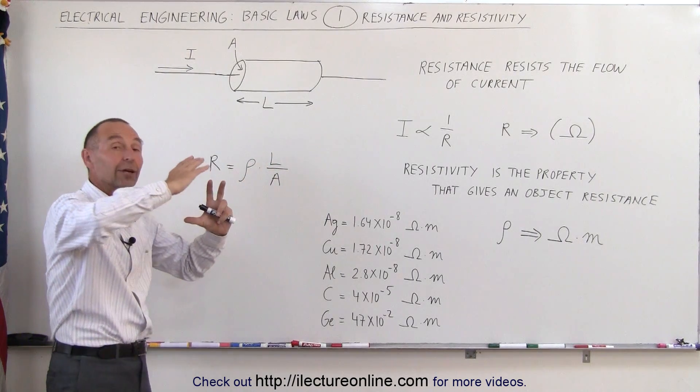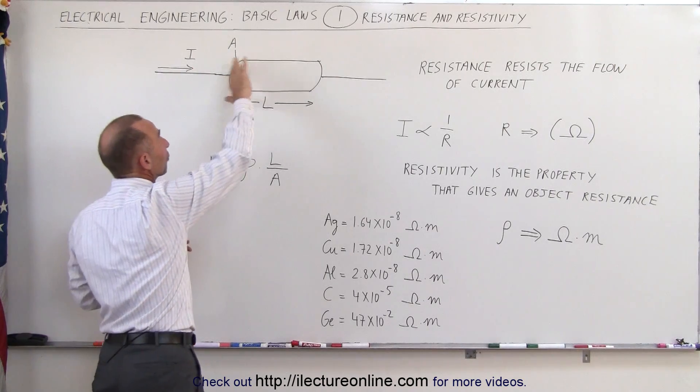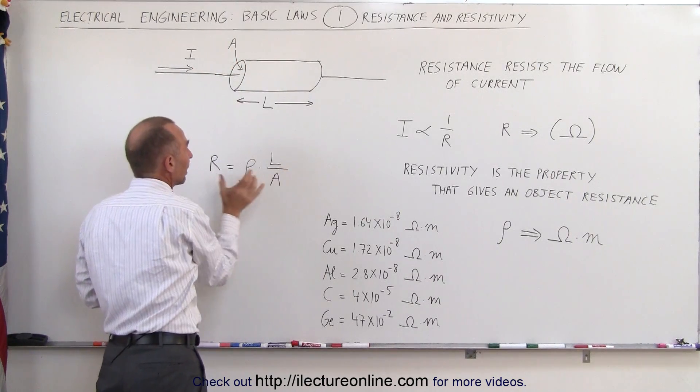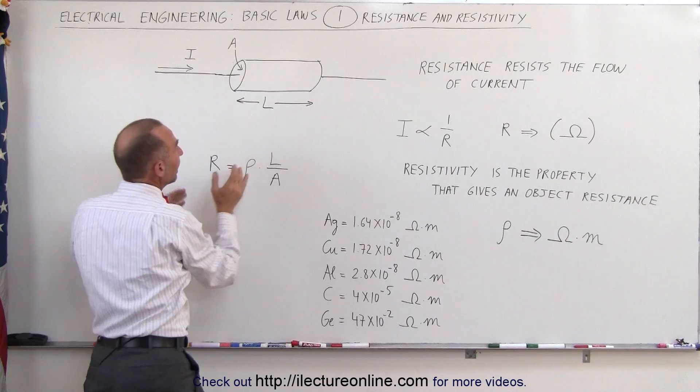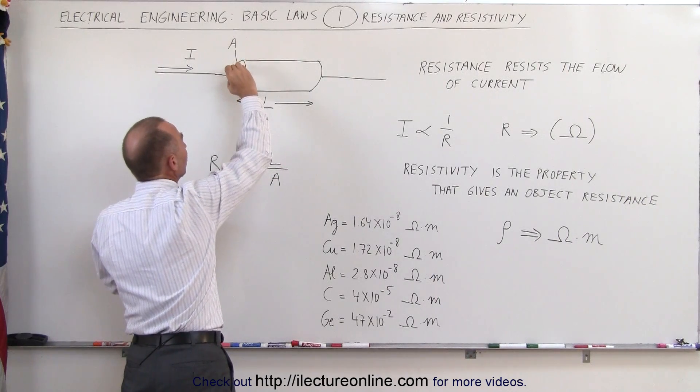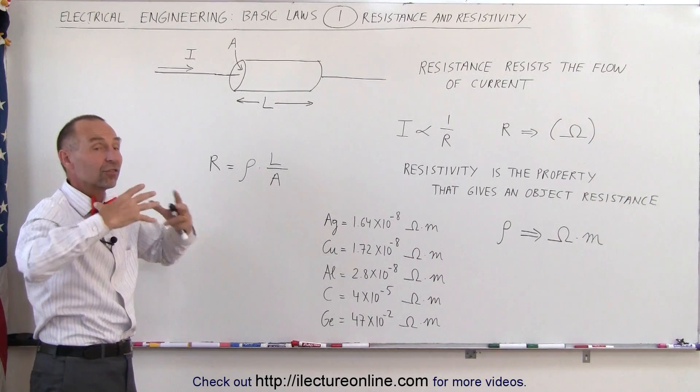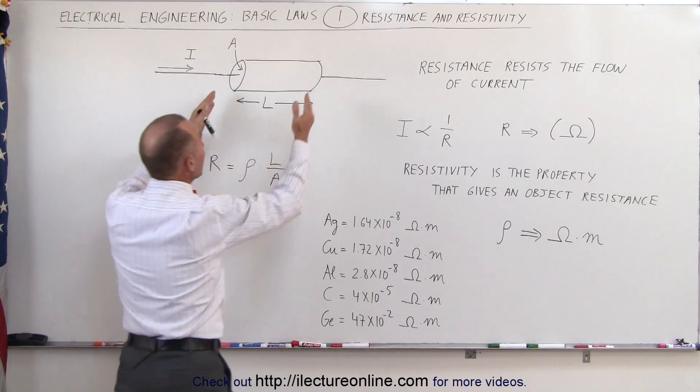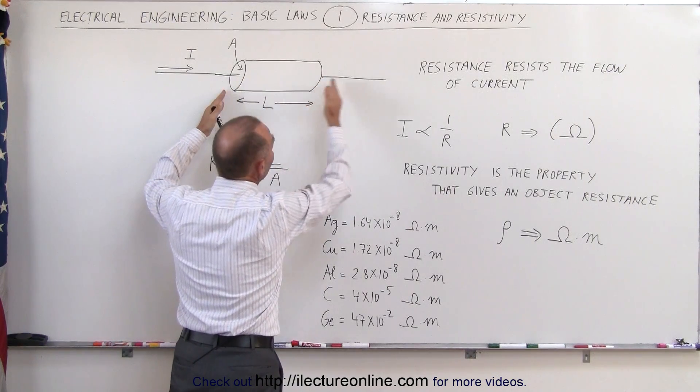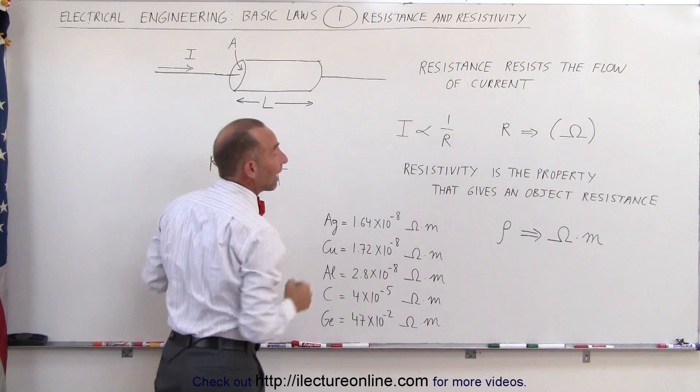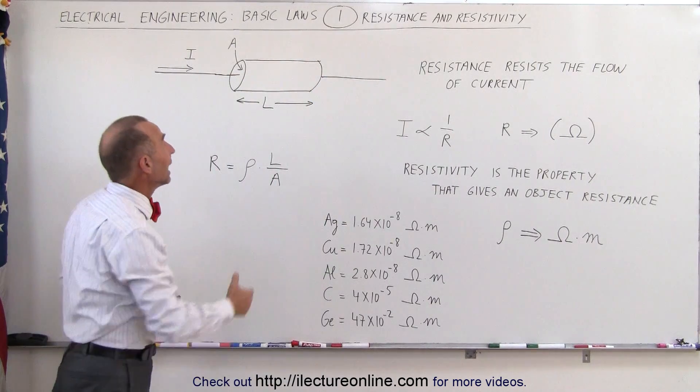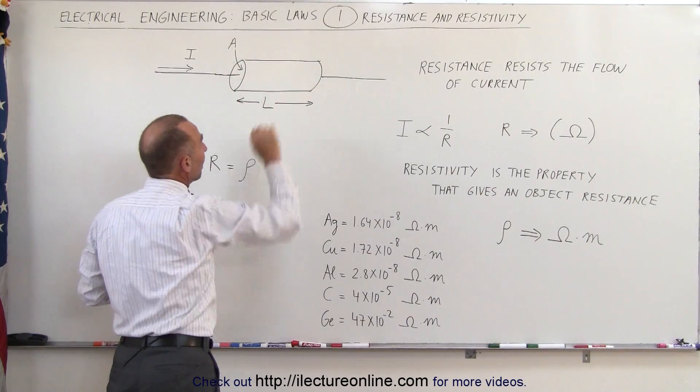If you make the cross-sectional area bigger, there's more paths for the current to take and therefore it will lower the resistance. If you make the cross-sectional area smaller, there's fewer paths that the current can take and therefore the resistance increases. If you make the object longer, there's a longer path through which the current has to struggle through, and therefore the resistance will go up.